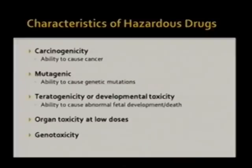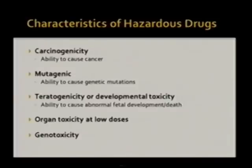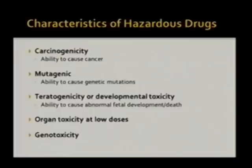We've seen patients who were treated for cancer with chemotherapy come back with secondary malignancies related to the treatment. The second characteristic is that it's mutagenic — we are talking about mutations in the DNA, because chemotherapy can affect cells and cause mutations that could lead to cancer. It's also teratogenic and has the ability to cause developmental toxicity to a fetus. It can cause organ toxicity at low doses, similar to the toxicities we see in patients, and it can also cause toxicity to genes.